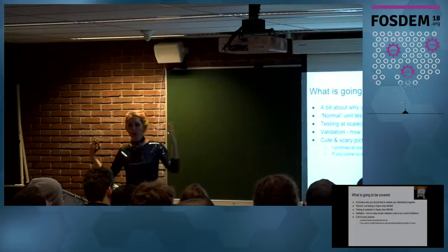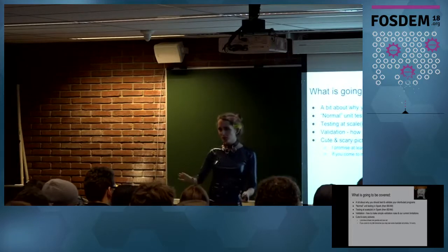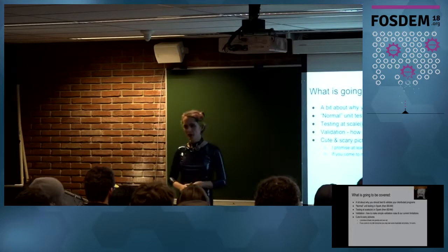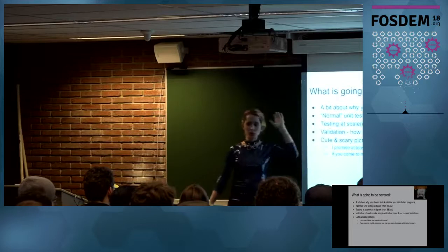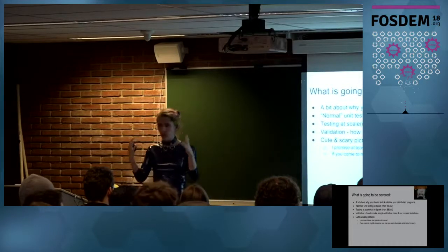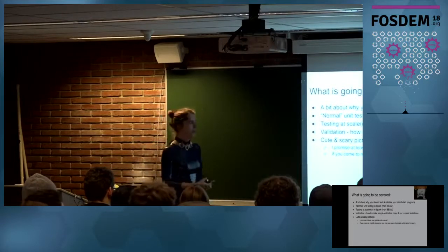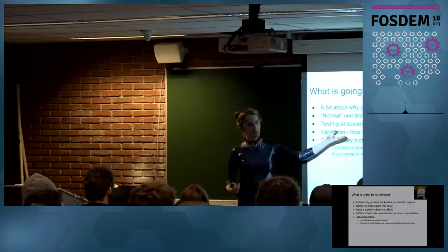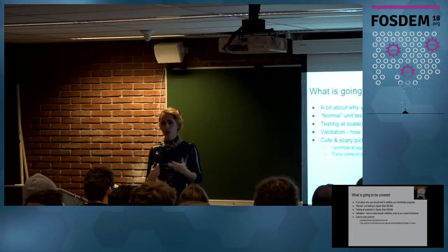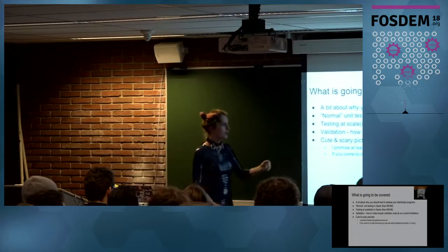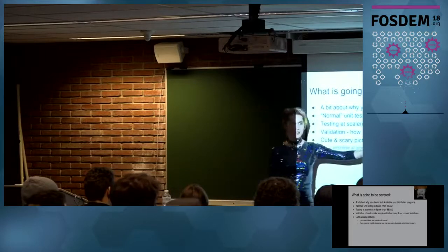I'm going to talk about why you should test and validate your distributed systems — you probably already care since you showed up to this talk. We'll look at normal unit testing in Spark and Beam, then talk about what happens when we need to go from unit testing to testing distributed properties of our system. Then we'll talk about validation, which I think is really important — I keep seeing people building pipelines with no validation. And there will be at least one panda and several cats.